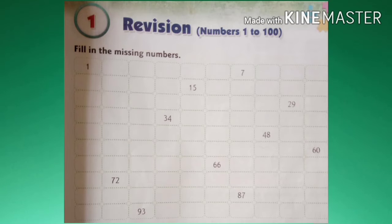Revision. Fill in the missing numbers. Where there is no number, you have to fill up. Suppose 1, then you write 2, then 3, likewise you write and go.